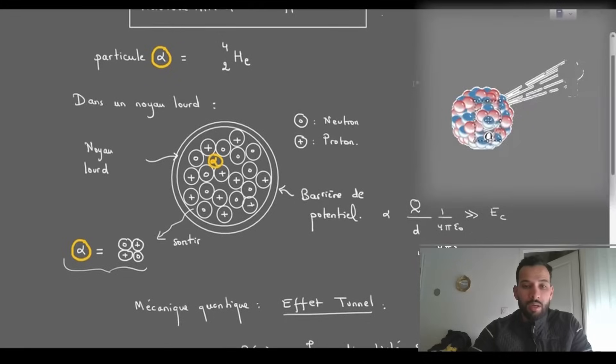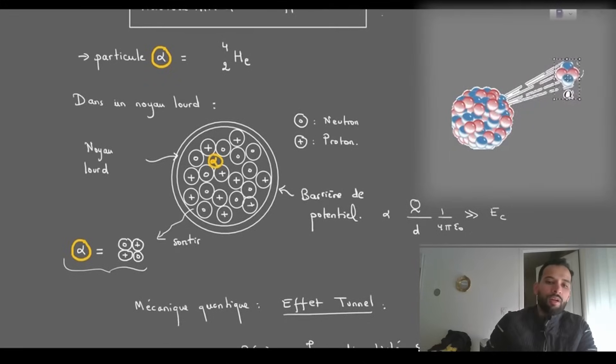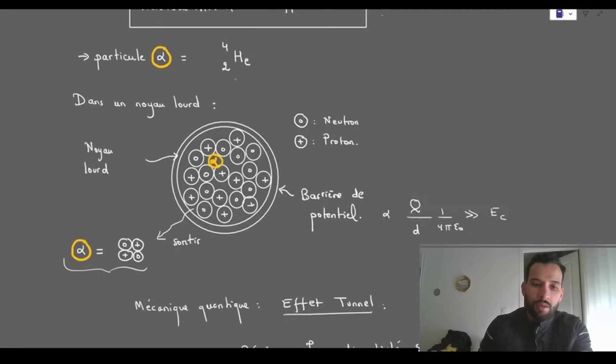Alpha radioactivity corresponds to the emission of an alpha particle, that is, a helium nucleus composed of two neutrons and two protons. This particle is ejected from a heavy nucleus.